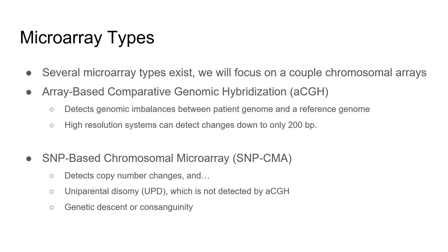Uniparental disomy is the result of a neutral loss of heterozygosity, meaning that one parent's gene or even an entire chromosome is missing, but the other parent's gene or chromosome is duplicated to compensate for that loss. Think about imprinting diseases like Angelman's. This allelic imbalance is only detected by SNP arrays.